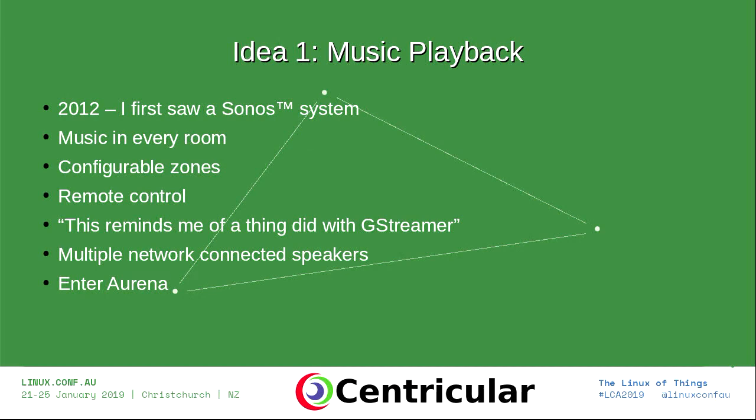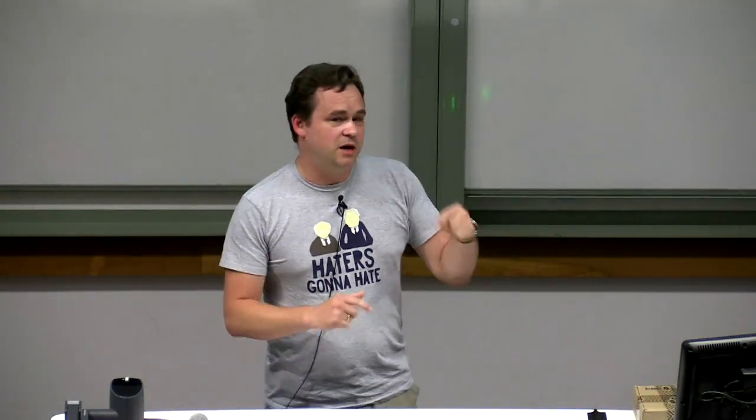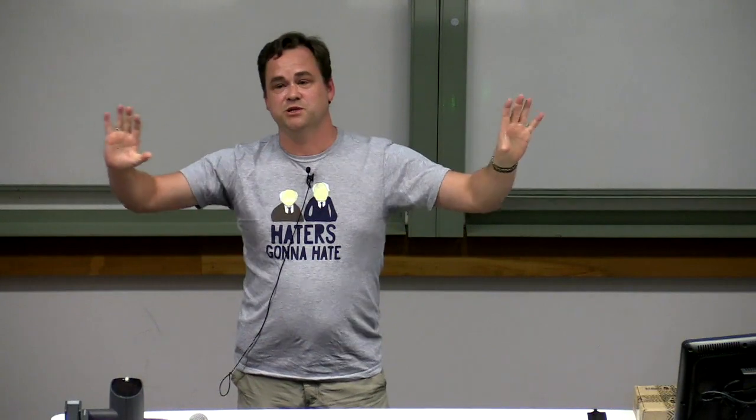The first idea I want to talk about is playing music. It starts in 2012 when I first saw a Sonos system at my cousin's house. He had Sonos speakers around his house doing music in every room, or set up with multiple zones for the bedroom, moving sound between zones. I thought this reminded me of something we did in 2005 with GStreamer — building a video wall using different machines to play different pieces of video across multiple machines. That led to my idea of multiple network-connected speakers, which is pretty common today. Smart assistants can do this kind of thing too.